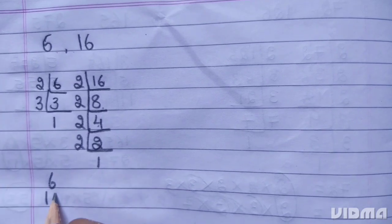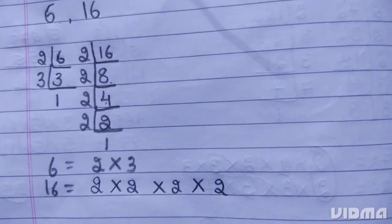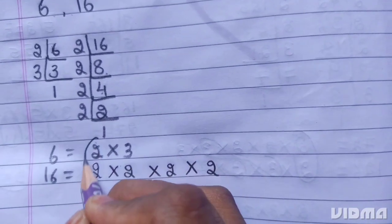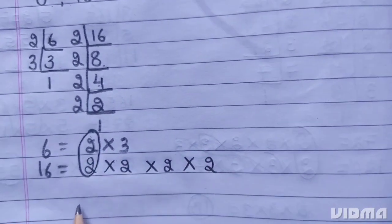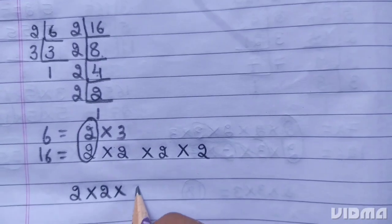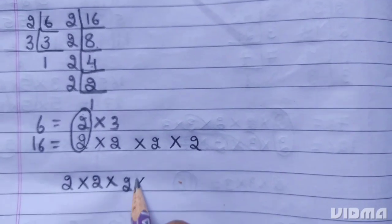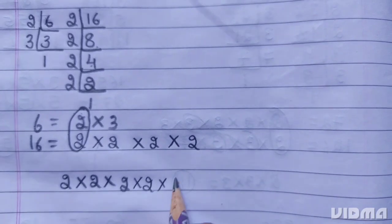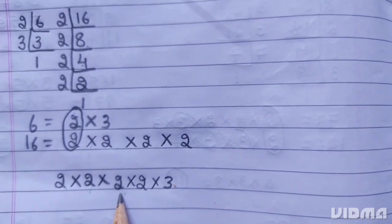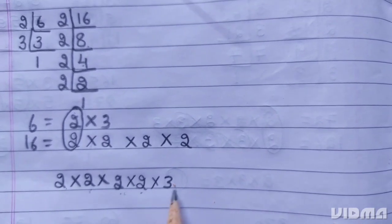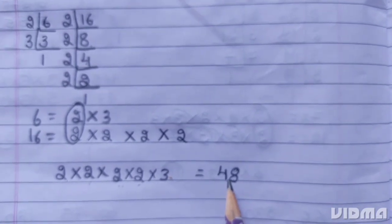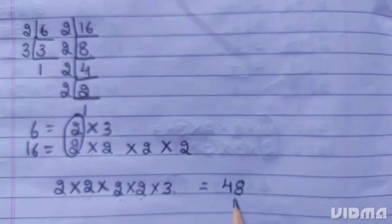Now for 6 and 16. LCM of 6 and 16 is: 2 times 2 times 2 times 2 times 3. 2 times 2 are 4, 4 times 2 are 8, 8 times 2 are 16, 16 times 3 are 48. LCM of 6 and 16 is 48.